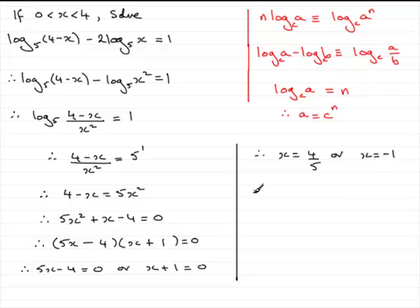Well, since x must lie between 0 and 4, therefore, we have to rule out, obviously, x equals minus 1. So, therefore, x equals 4 fifths.